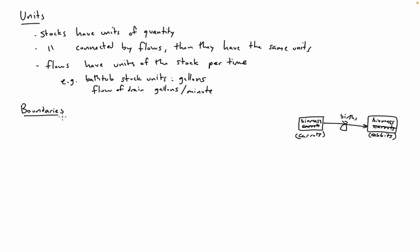The next thing to talk about is boundaries, which we've mentioned a bit. Boundaries are an important step when defining the system. You can actually see in the two rabbit examples that we chose different boundaries — in one model we included the food source, whereas before we just drew it as a cloud.